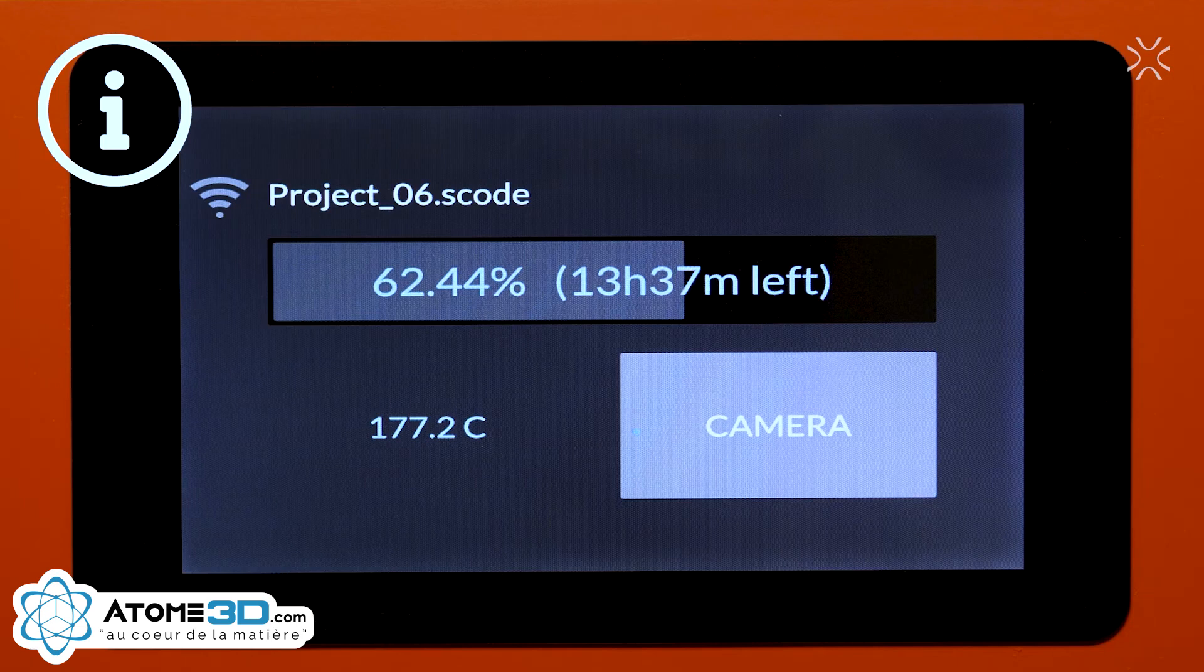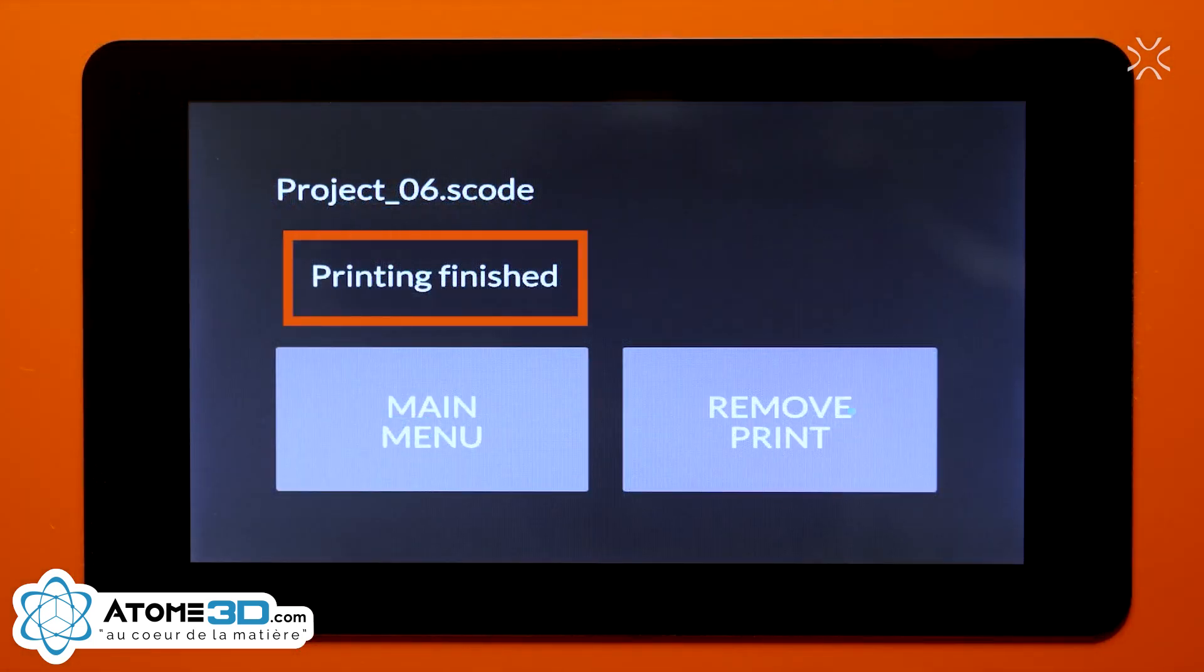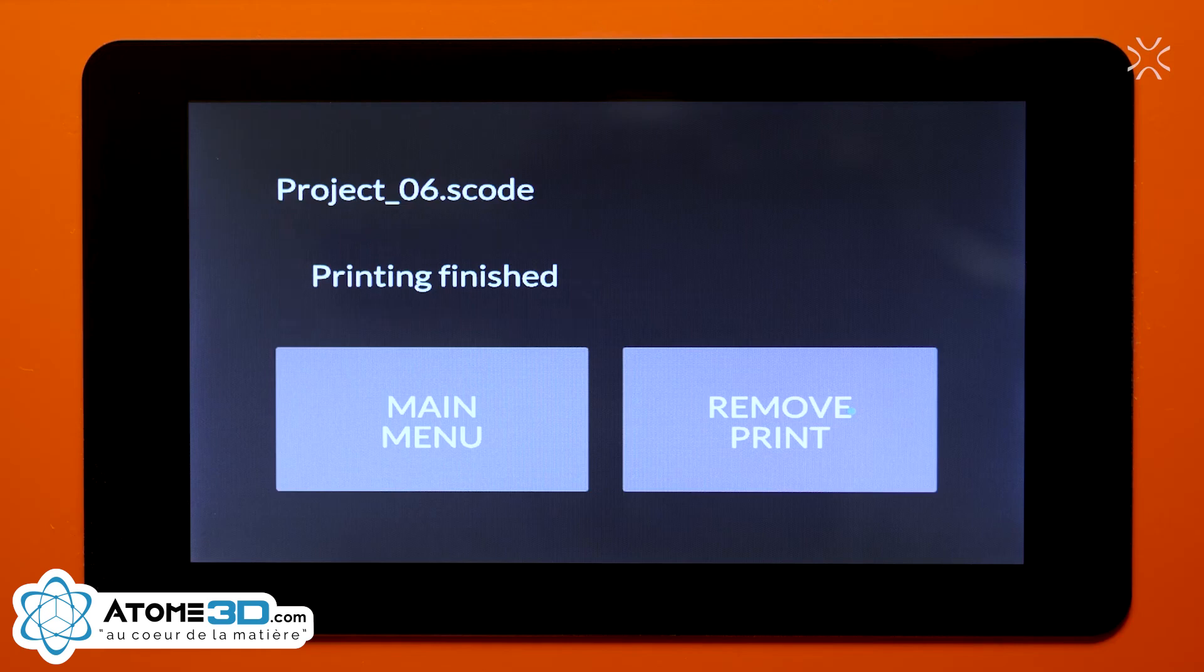When the printing is done, the message Printing finished and the name of the printing file is displayed. The buttons Main Menu and Remove Printout will appear as well.